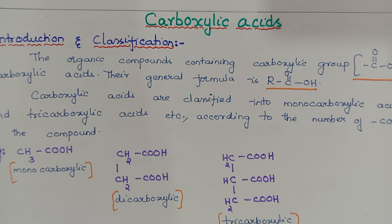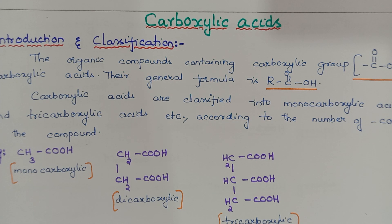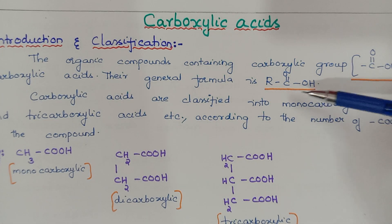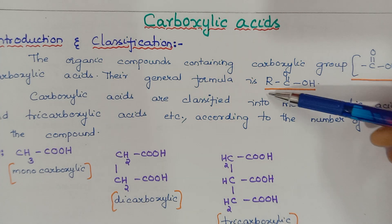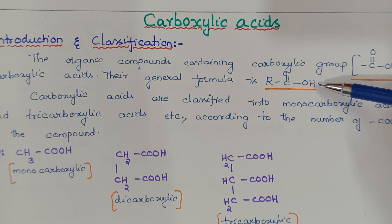A carboxylic acid contains COOH, that is the carboxylic functional group. The general formula of a carboxylic acid is R-C double bond O, OH, where R is attached to the COOH group.